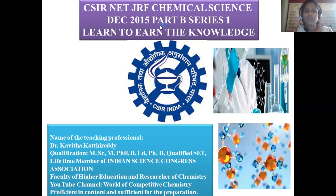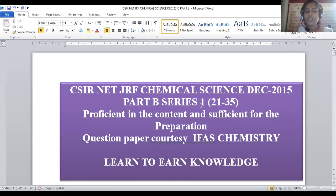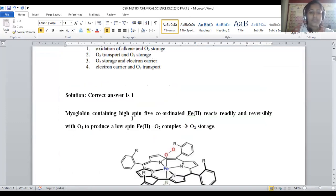Quickly solved question papers are available. Today we are going to discuss question numbers 21 to 35 in Series 1. Let us enter into our actual concept. This series consists of question numbers 21 to 35. Question number 21: the biological functions of cytochrome P450 and myoglobin are respectively. This is a question from bio-inorganic chemistry — what are their major functions?